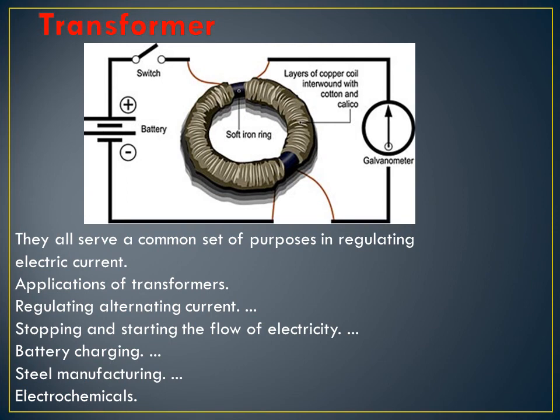Transformers all serve a common set of purposes in regulating electric current. In the diagram you can see the round soft iron ring in the middle, then the switches and the battery.